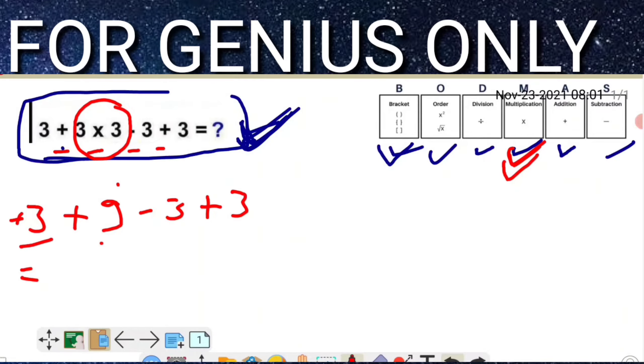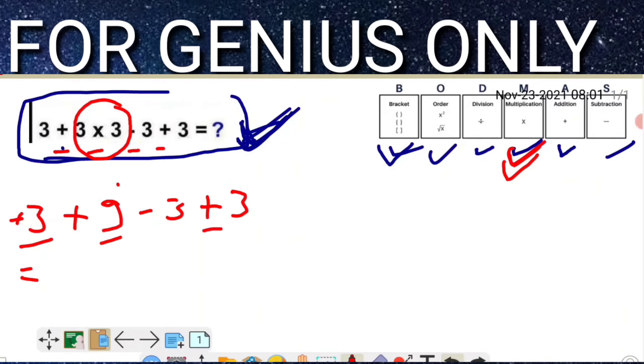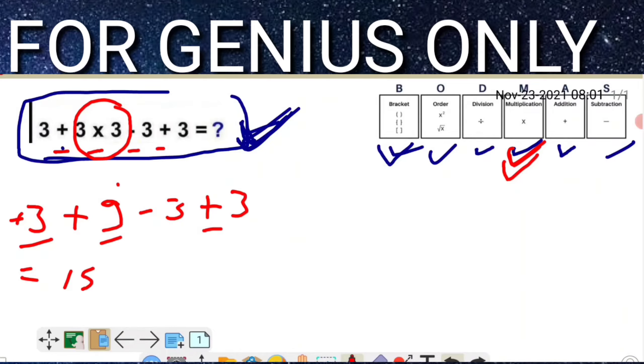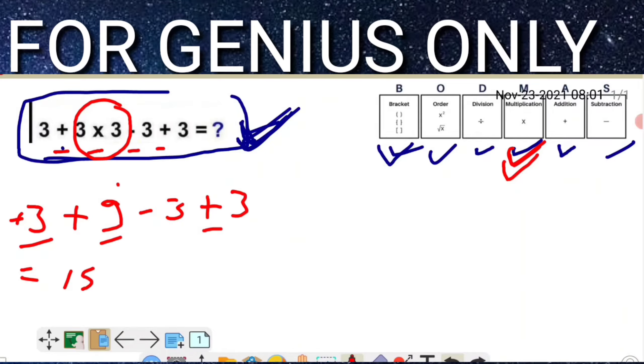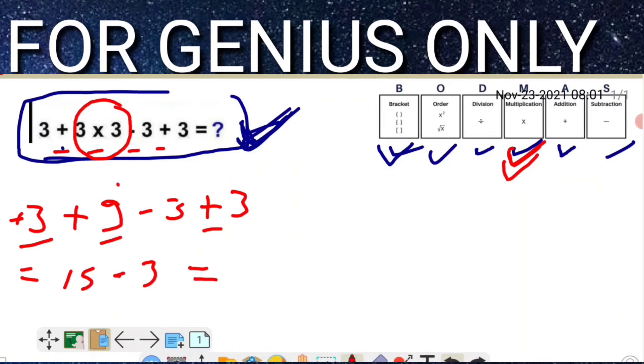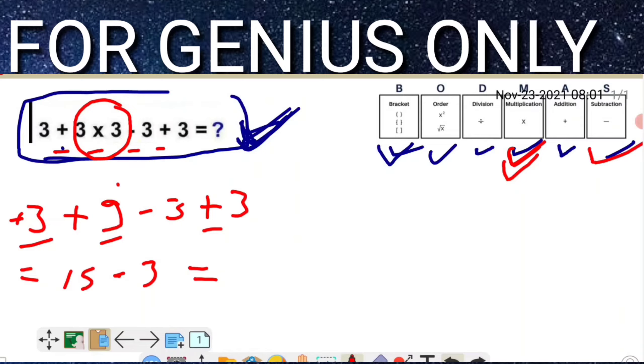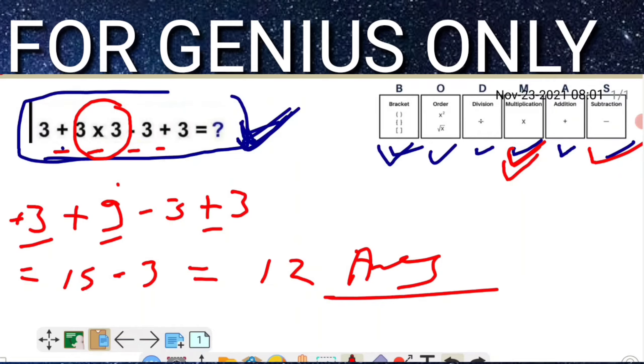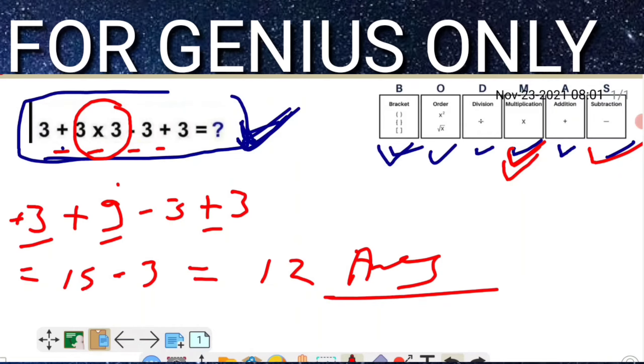3 plus 9 equals 12, and 12 plus 3 equals 15. Then minus 3, because subtraction is the last thing we calculate. So the answer is 12. I hope you understand how I solved this equation.